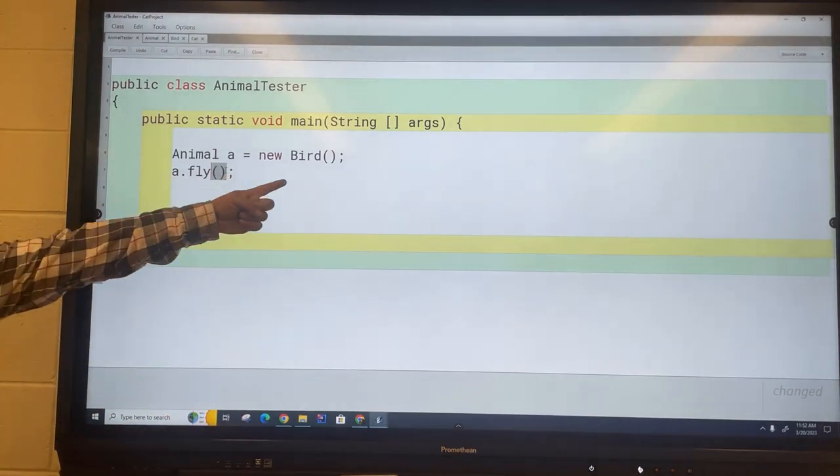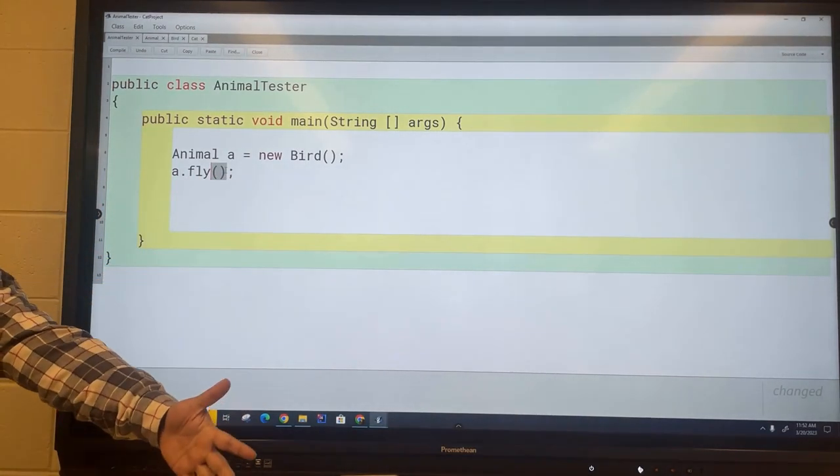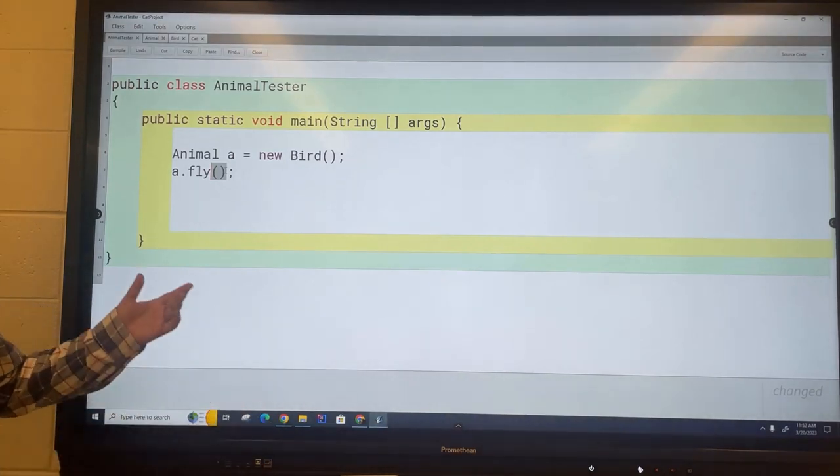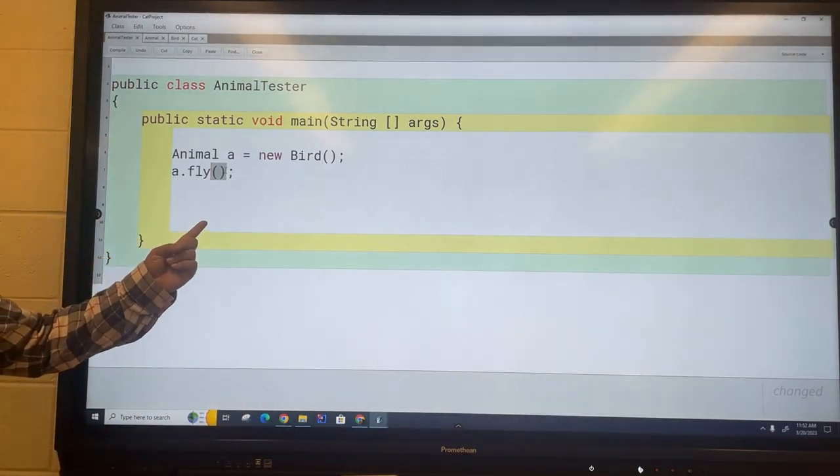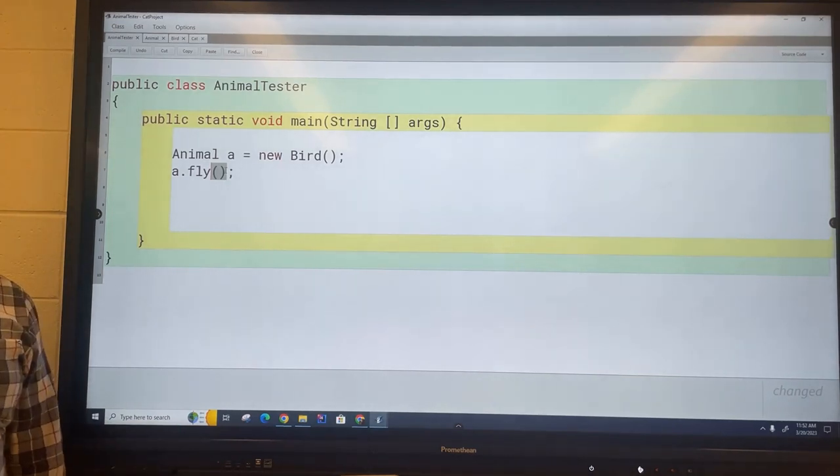I already showed you in the last example when I call the speak method it knows it's a bird right, so calls the bird speak method, it goes chirp. Now all I want it to do is fly, should work right? It's a bird, what do you think?